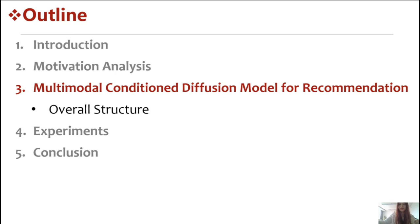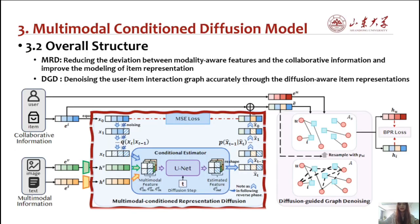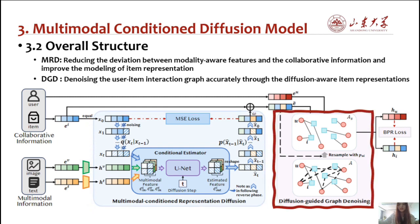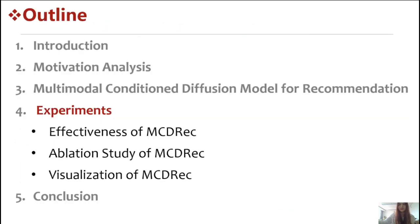The third section is our proposed MCDRec. In the left part, MRD reduces the deviation between modality-aware features and the collaborative information, and improves the modeling of item representation. In the right part, DGD denoises the user-item interaction graph accurately through the diffusion-aware item representations.